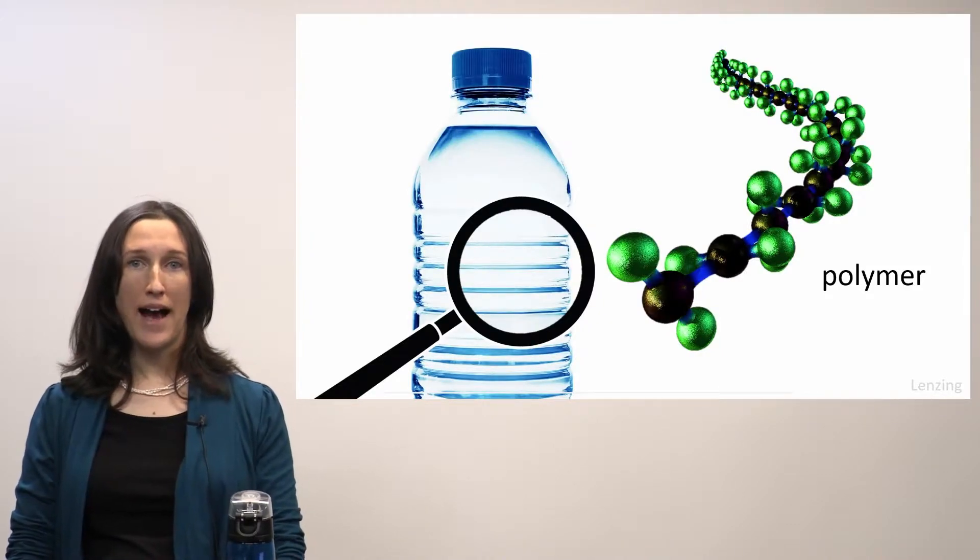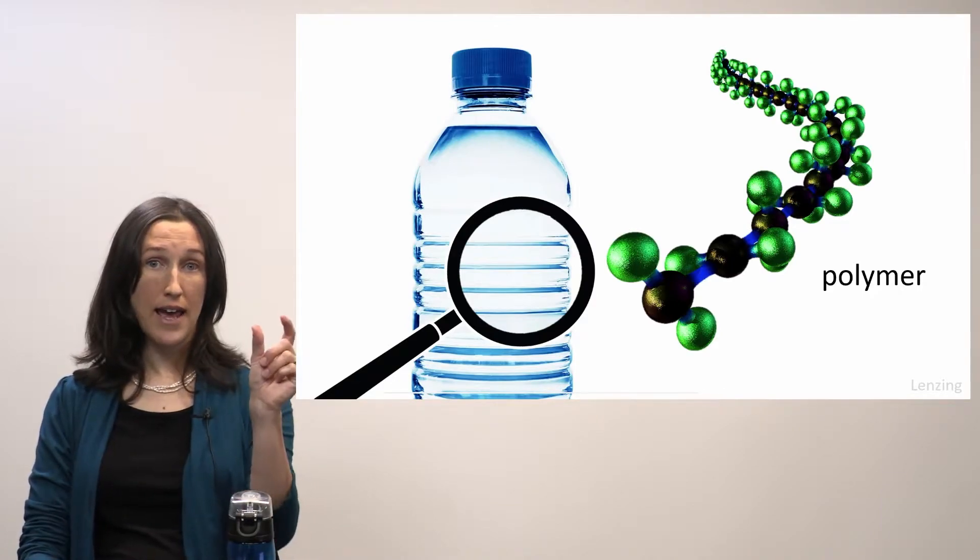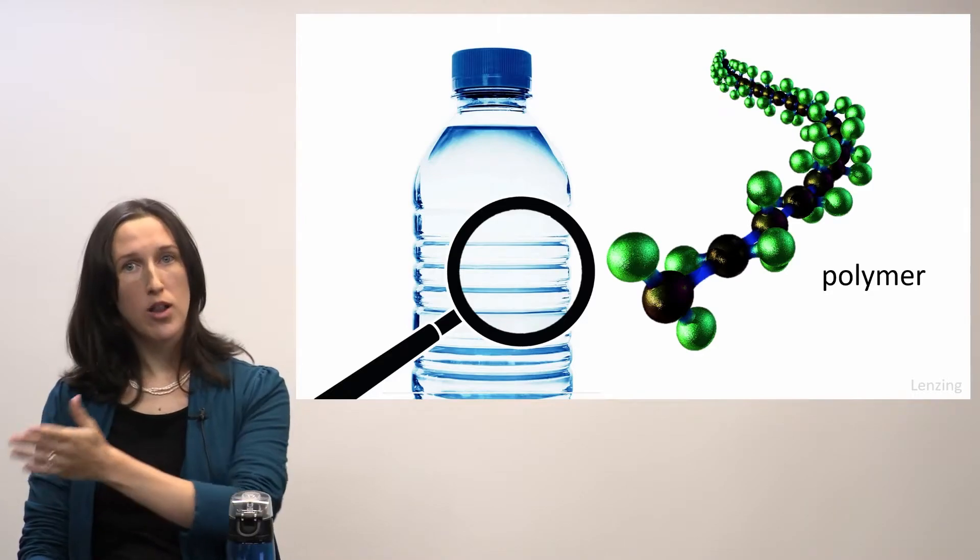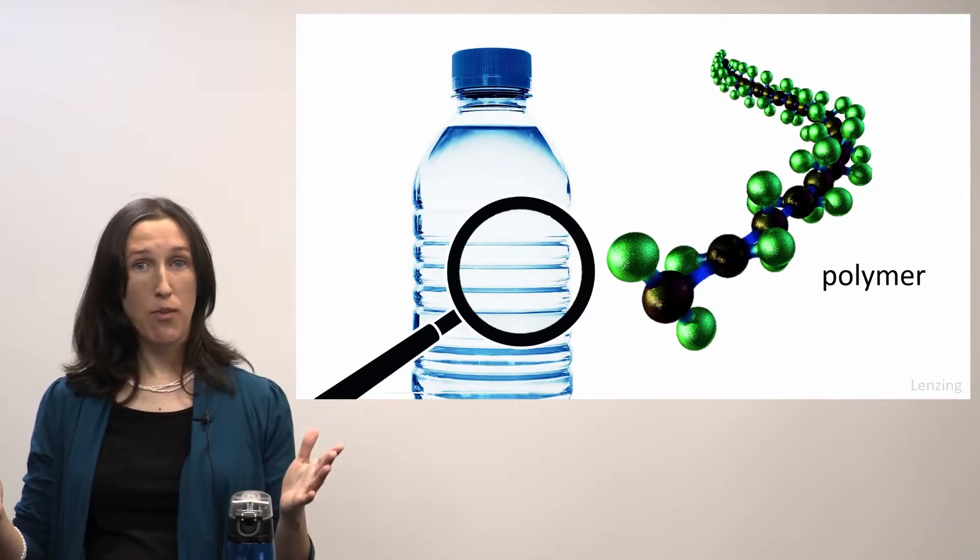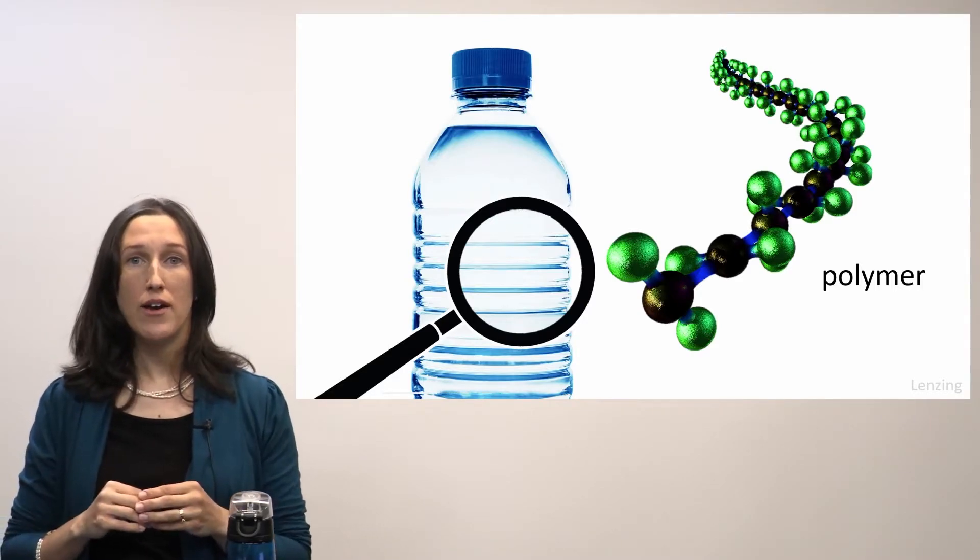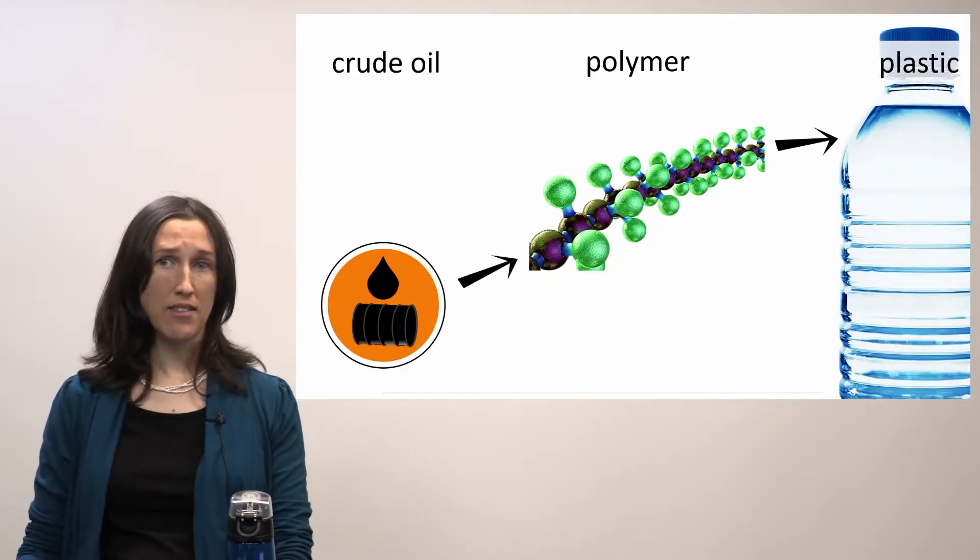So the goal of my research is to develop packaging alternatives. I do this by looking at plastics on the nanometer scale. Plastics are made out of polymers—a polymer is a long chain molecule that's made of the same unit repeating over and over again. So this is a polyethylene water bottle.